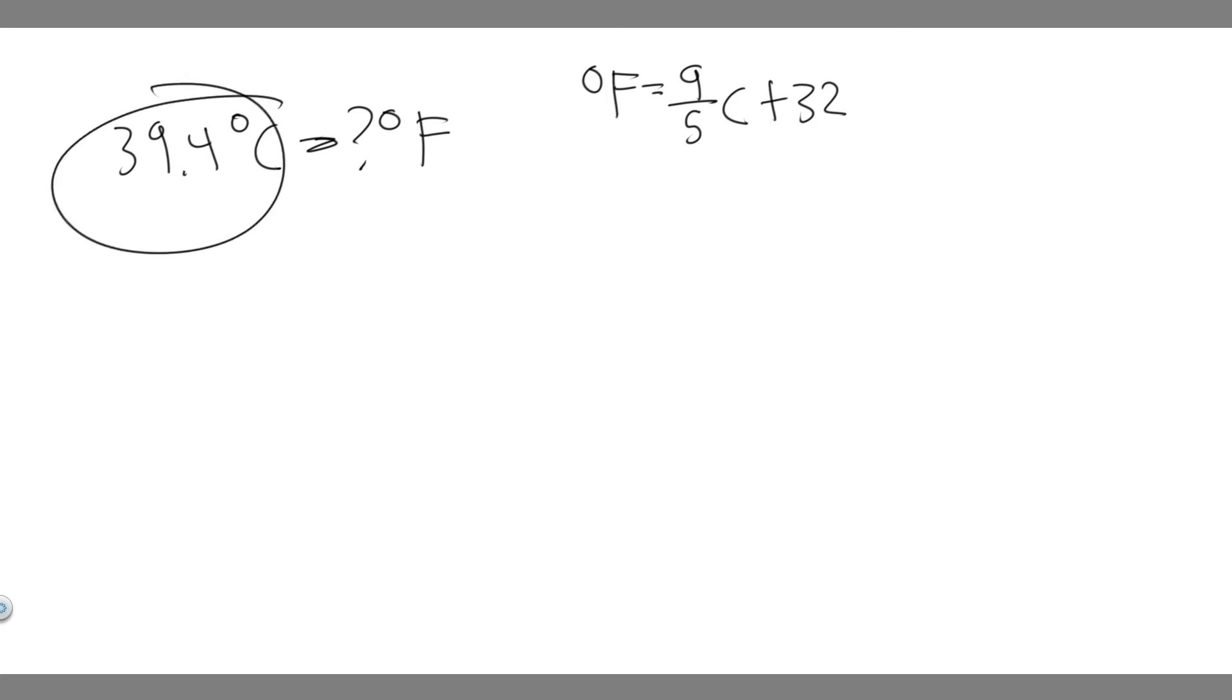So we have 39.4 degrees Celsius, so it's going to be equal to 9 over 5 times 39.4, and then you're just going to add 32.